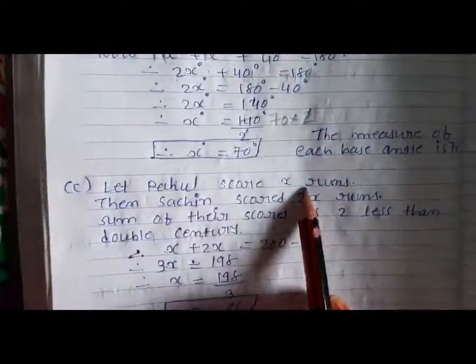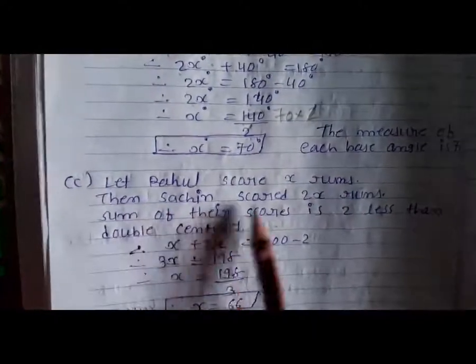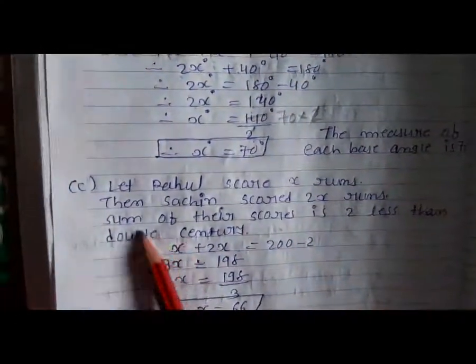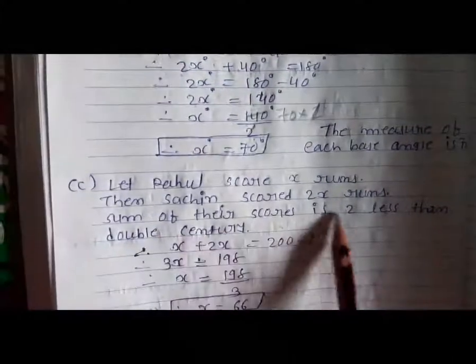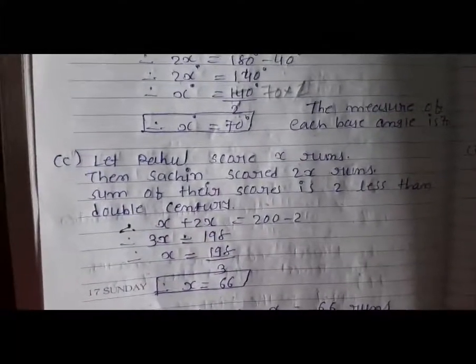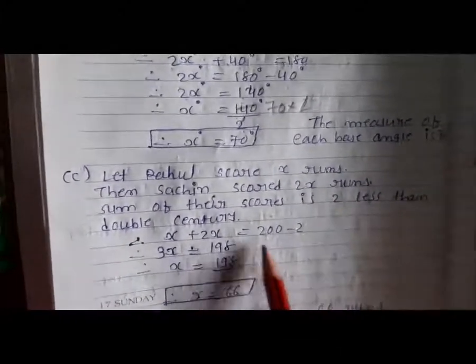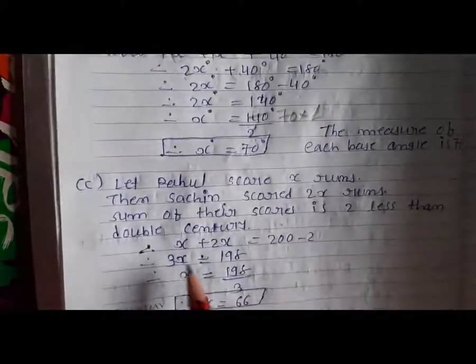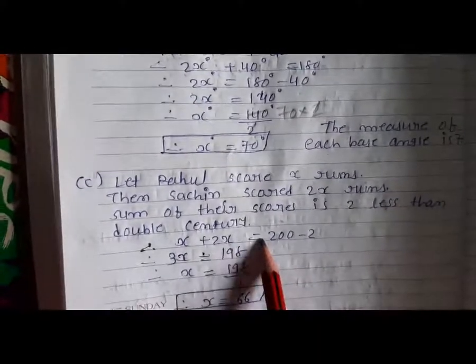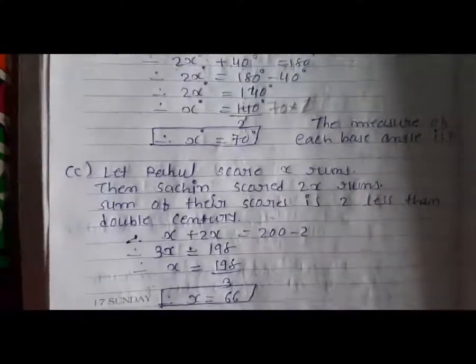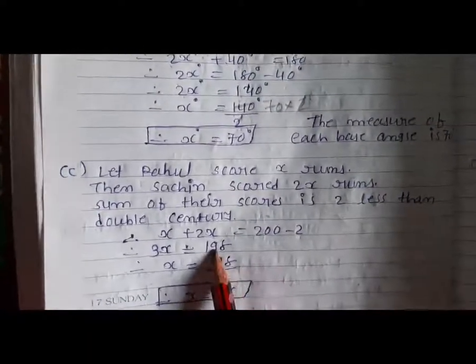Let Rahul's score be X runs, then Sachin's score is 2X runs. The sum of their scores is 2 less than the double century. So, X plus 2X is equal to 200 minus 2, which is 198.